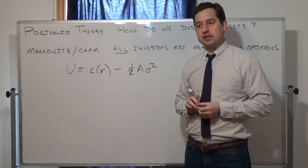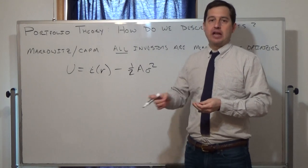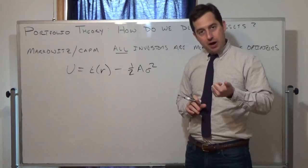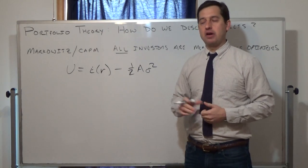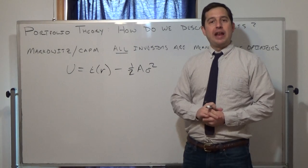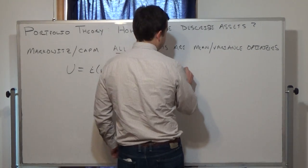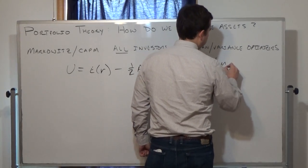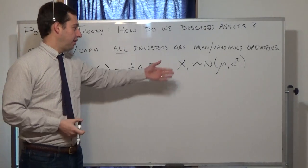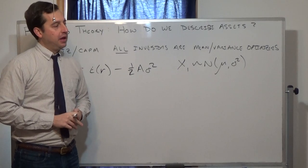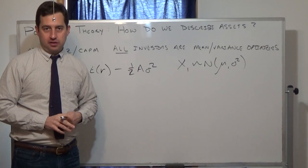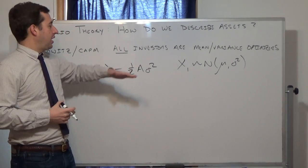If we're looking for a probability density function to describe assets that is completely defined by its first two moments — mean and variance — the normal distribution fits perfectly. Very often we simply assume that asset X1 is distributed normally with some mean and some variance. Markowitz and CAPM don't strictly require a normal density, but at the undergraduate level we can just assume normality.